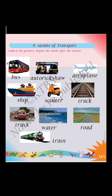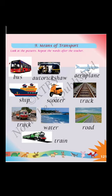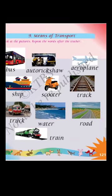We are seeing these transport and how they move. Bus moves in the land transport, auto rickshaw is also land transport, aeroplane flies in the sky. Ship sails in the water. Scooter moves on the road. The train runs on the track. The truck moves goods from one place to another. Boats and ships sail on the water. The last one is the train.